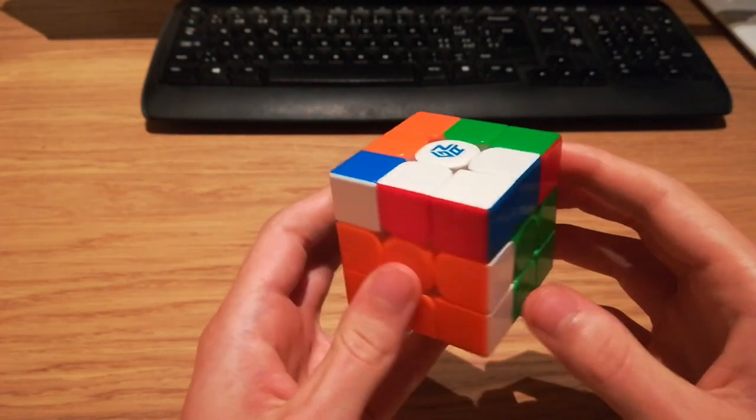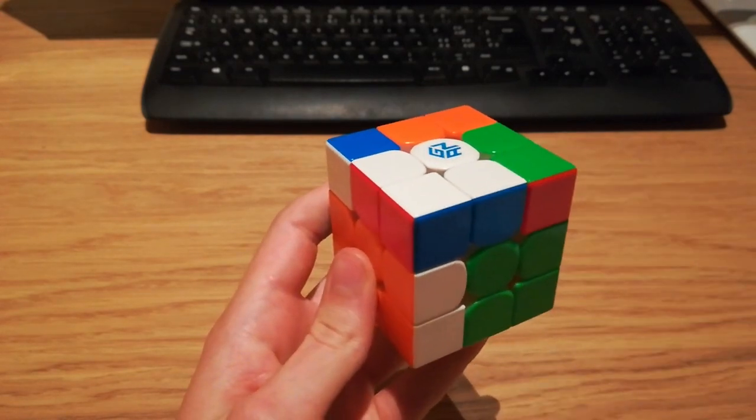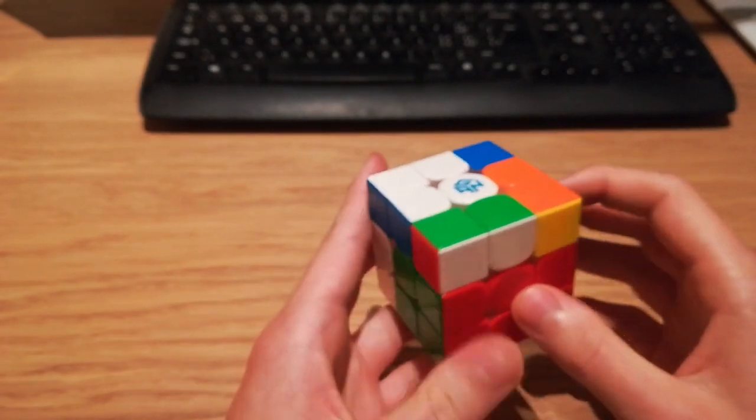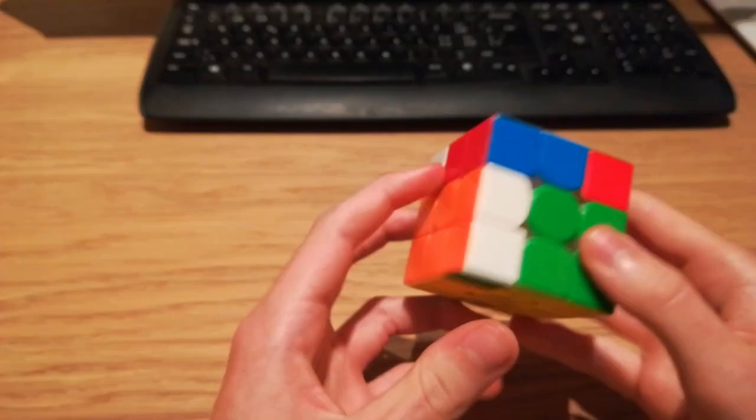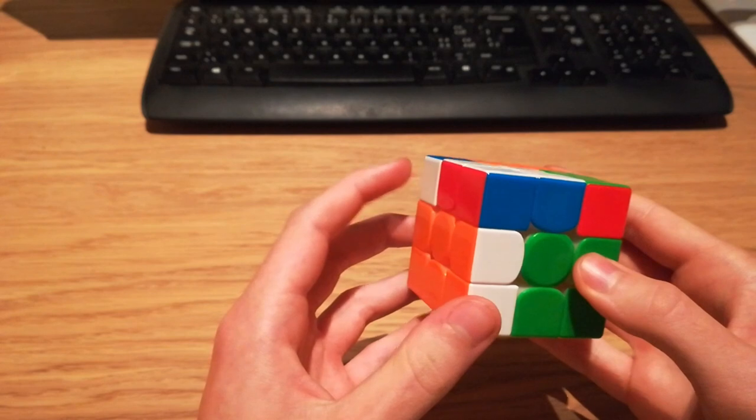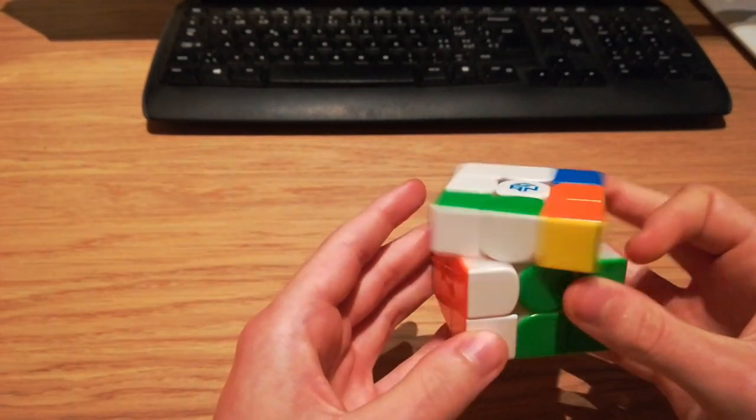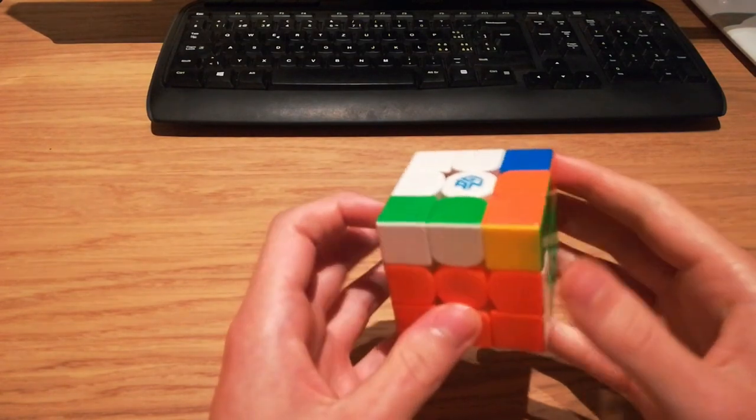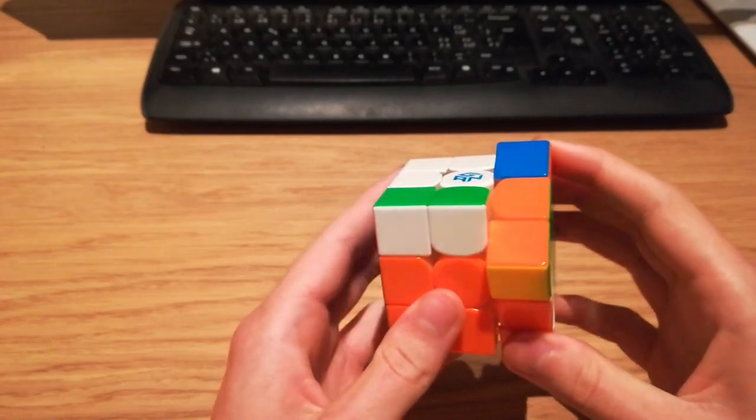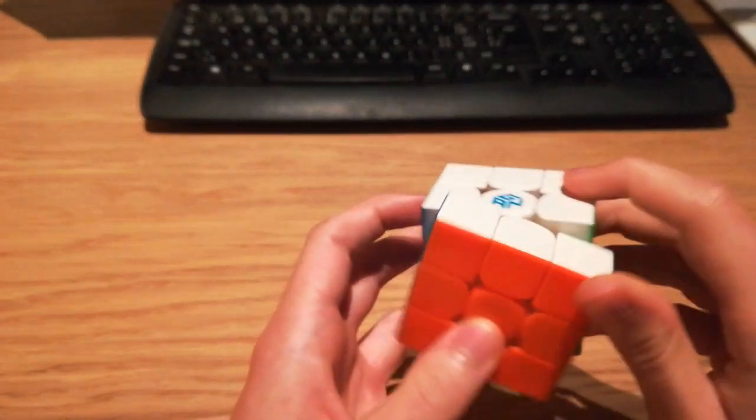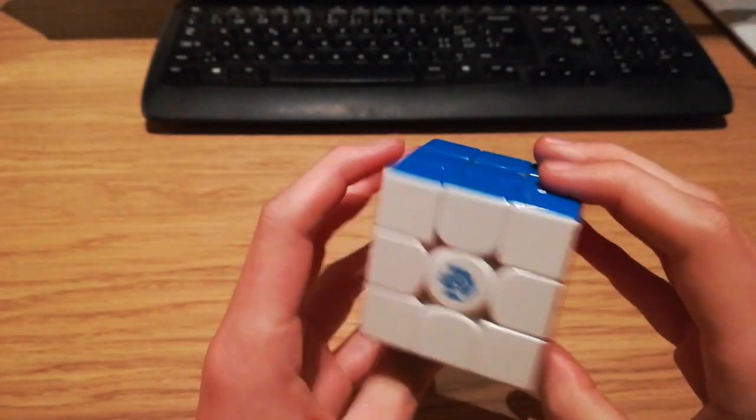And now you can maybe see where we're going with this. So now all we have to do to make our first two layers is to insert this pair here. And judging by this big block, if we insert this one with a sledgehammer instead of a regular insert, it just solves the whole cube.